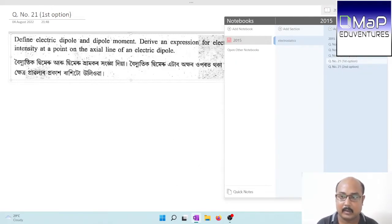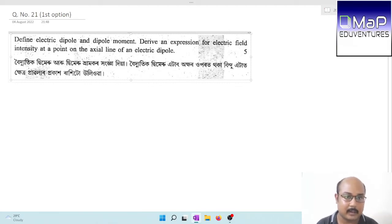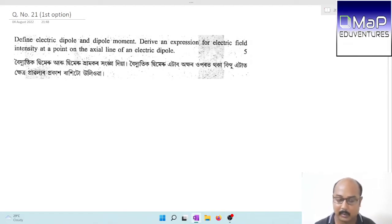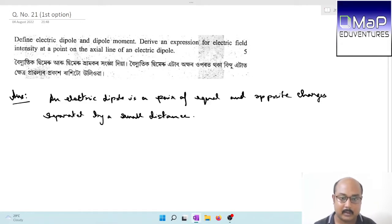This is the energy stored in the capacitor. Then we move to the bigger questions, question number 21. Define electric dipole moment, electric dipole, and dipole moment. Derive an expression for electric field intensity at a point on the axial line of an electric dipole. Electric dipole and dipole moment definitions. What is an ideal electric dipole?